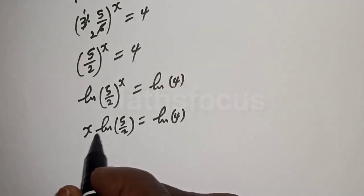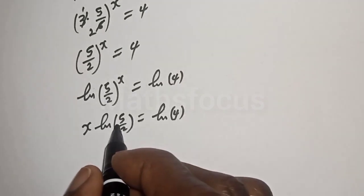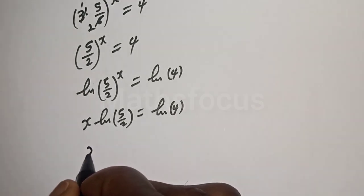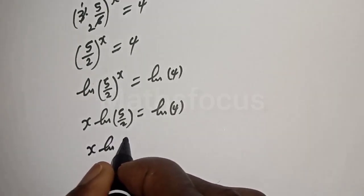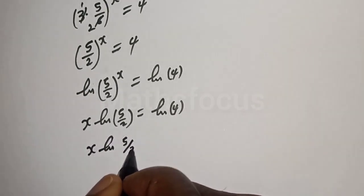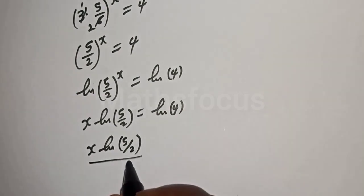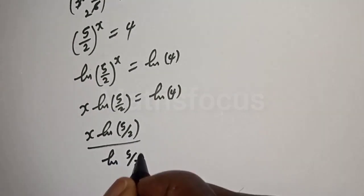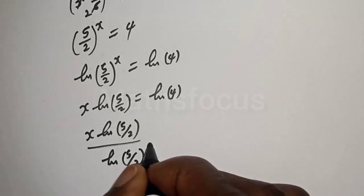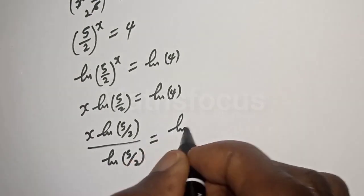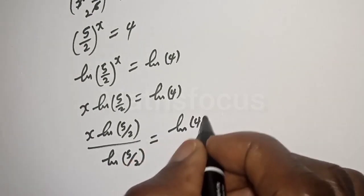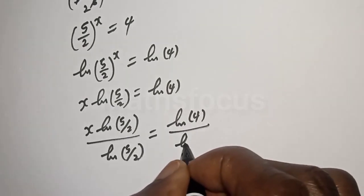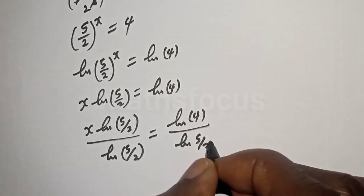Now we are looking for the value of x. Let's divide both sides by natural log of 5 over 2. That is, x times natural log of 5 over 2 divided by natural log of 5 over 2 is equal to natural log of 4 divided by natural log of 5 over 2.